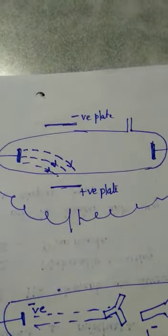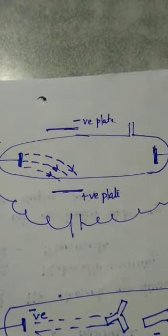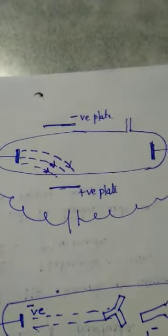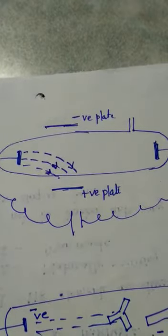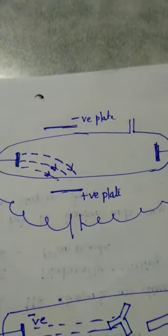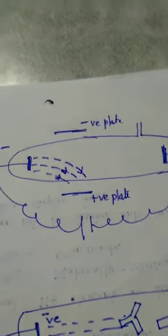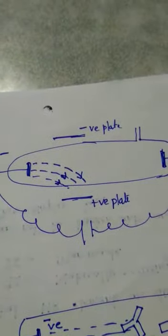So it was observed that these rays travel towards the positively charged plate, which showed that these are negatively charged particles or rays which are getting emitted from the cathode, that is the negative terminal.